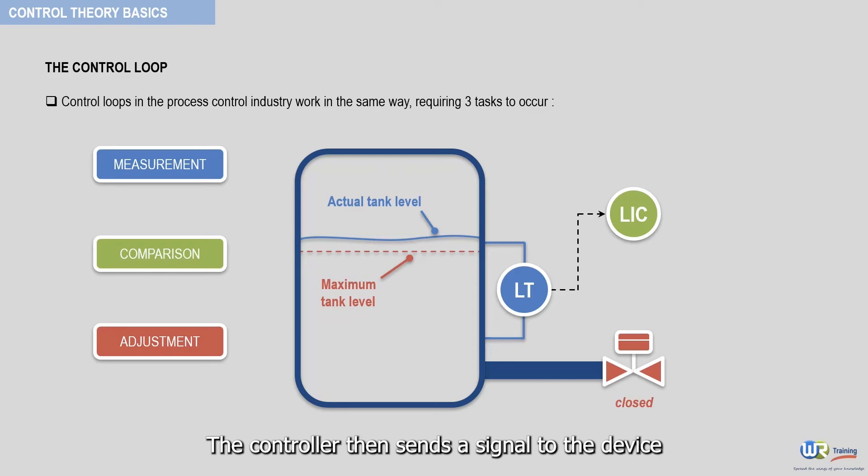The controller then sends a signal to the device that can bring the tank level back to a lower level. In our case, a valve at the bottom of the tank. So the valve opens to let some liquid out of the tank.